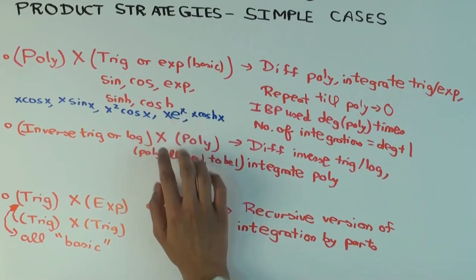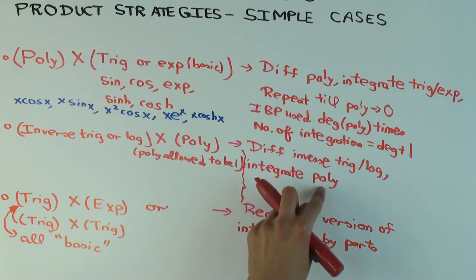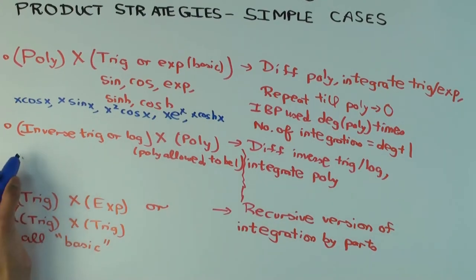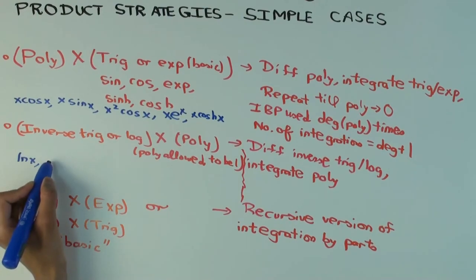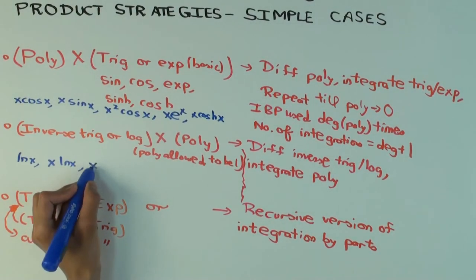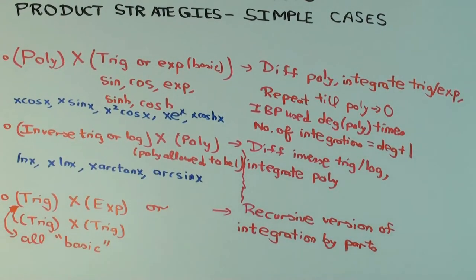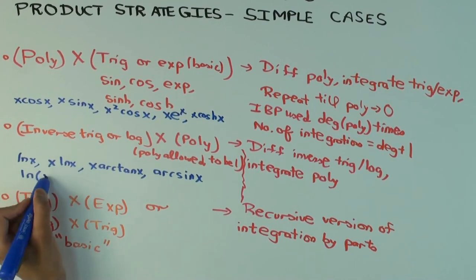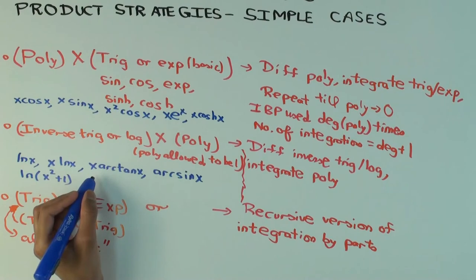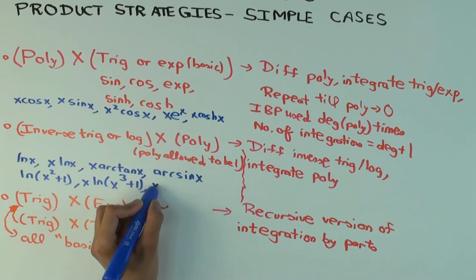And then use integration of parts to do this. So what are some examples? ln x. The natural log of x. Here, the polynomial is just 1. X ln x. X times the natural log x. X arctan x. Or arc sine x. You could have a bunch of these. There's also slightly more complicated ones, which are sort of composites, which basically work the same technique. So you could have ln of a polynomial. Those work almost exactly like what I've written. You could have something like x times ln of x cubed plus 1.